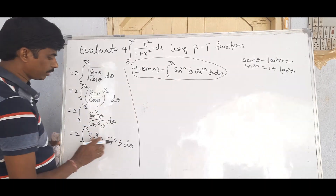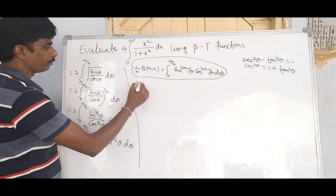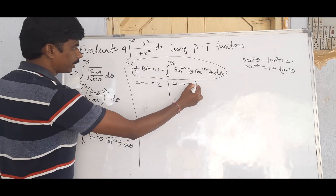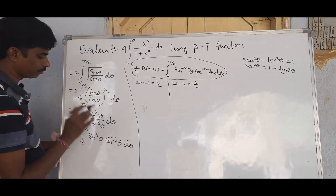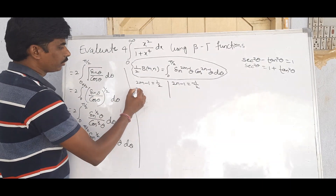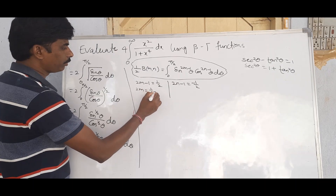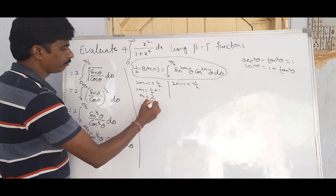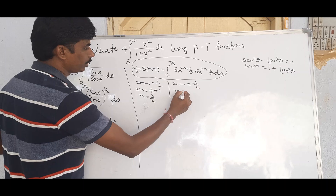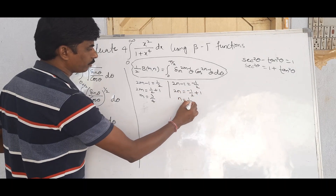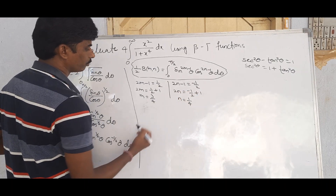Comparing exponents: 2m − 1 = 1/2, giving 2m = 3/2, so m = 3/4. And 2n − 1 = −1/2, giving 2n = 1/2, so n = 1/4. Using these values, the integral equals 2 × (1/2) × β(3/4, 1/4), and the 2 cancels to give β(3/4, 1/4).